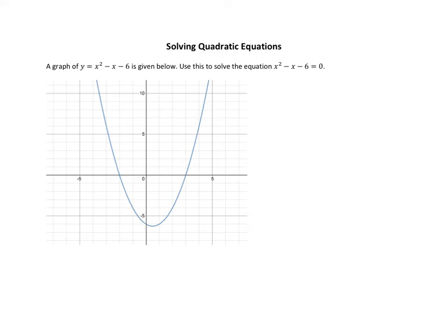In this lesson, I'm going to cover a couple of methods for solving quadratic equations. To start with, I graphed the quadratic equation x squared minus x minus 6. Here's this graph. It's a quadratic because the highest-powered x term is a 2. And what I'd like to do is use this graph to solve the equation where x squared minus x minus 6 is equal to 0.